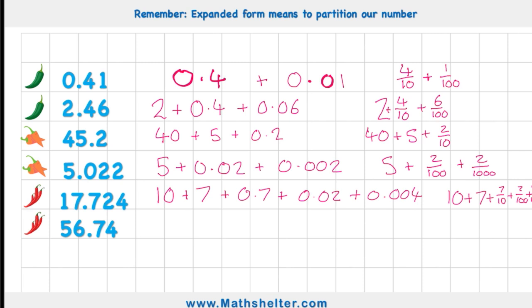And finally, 56.74 would be 50 added to 6, added to 7 tenths, added to 4 one hundredths. Or in other words, 50 plus the 6 plus 7 tenths, plus 4 one hundredths.